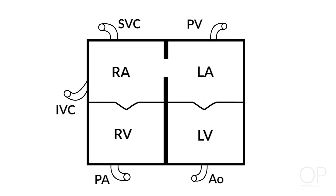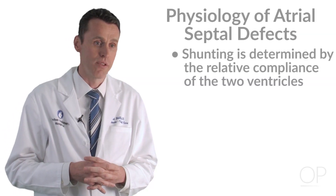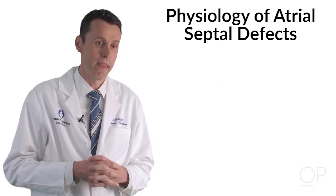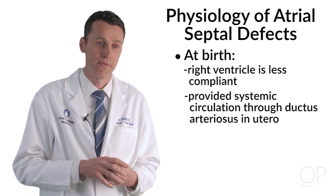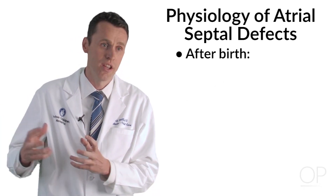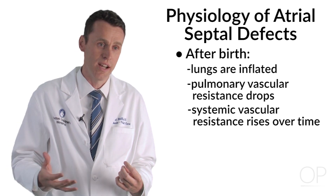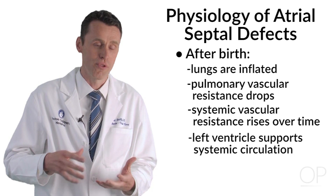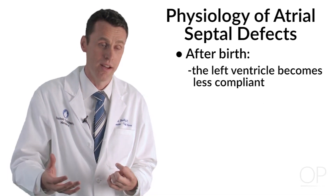If there's an atrial septal defect, once the blood returns to the left atrium, it essentially has a decision to make: is it going to shunt to the right side of the heart or continue on to the left side? The definitive point of where the blood shunts is determined by the relative compliance of the two ventricles. At birth, the right ventricle is less compliant because it has essentially been behaving as a left ventricle in utero by providing systemic circulation through the ductus arteriosus. However, after birth, the placenta is detached, the lungs are inflated, the pulmonary vascular resistance drops, and the systemic vascular resistance rises over time as the LV supports a systemic circulation.